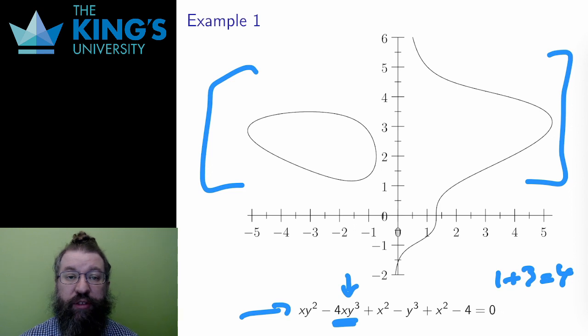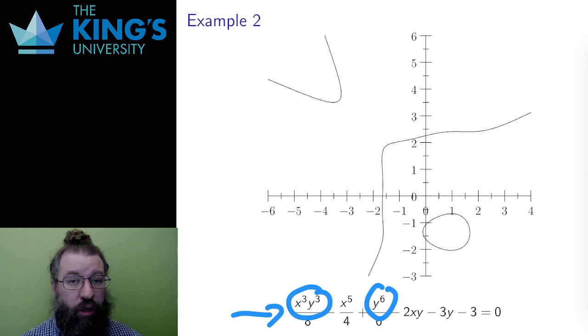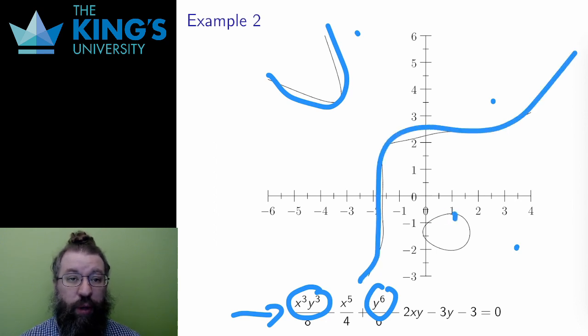Here is a degree six algebraic plane curve. Degree six because both the terms x cubed, y cubed, and y to the sixth have total degree six, and they are the highest degree terms in the polynomial. A strange and complicated shape results. There are three components. Two of the components are unbounded, one with a sharp corner, and one closer to a diagonal path across the plane, and then there is one bounded component as well.